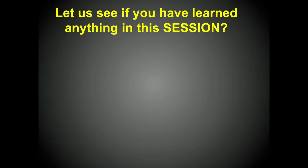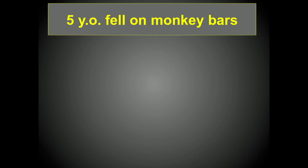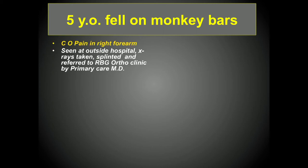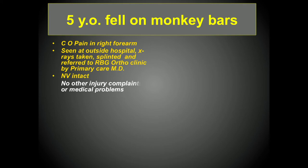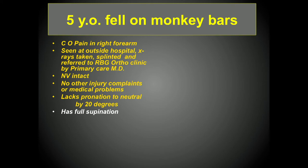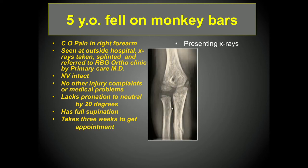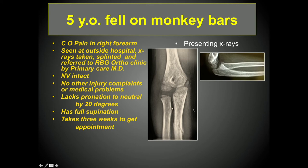Let's see if you learned anything in this session. Here's a five-year-old who fell off the monkey bars complaining of pain in the right forearm. He was seen splinted and sent to the clinic by the primary care physician — nerve and vascular intact, no other injury complaints. He lacks pronation to neutral by about 20 degrees and has full supination. It took three weeks to gain an appointment, so he presents now with a little bit of callus — it's already starting to heal.